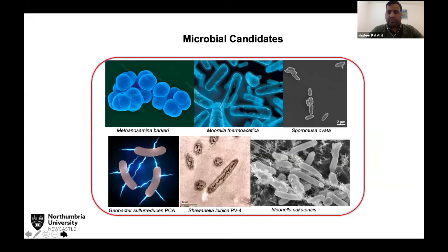The question is whether we can improve this system using non-toxic light harvesters and more efficient acetogenic bacteria. We are using different microbial candidates: Methanosarcina barkeri is a methane-producing bacterium from CO₂; Moorella and Sporomusa are both acetogenic bacteria making acetate from CO₂; Geobacterium and Shewanella are electrically active microbes that can make electricity and produce hydrogen from protons. We are also working on plastic-eating bacteria, though that is not today's focus.